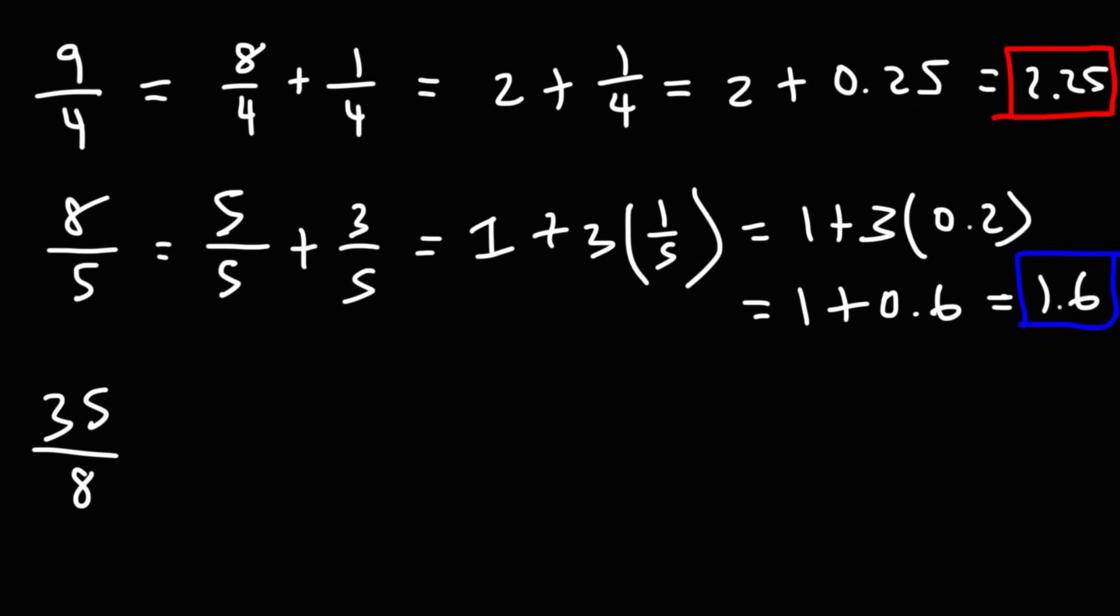Now 35 over 8. The highest multiple of 8 just under 35 is 32, and 35 minus 32 is 3. So we got these two numbers. 32 divided by 8 is 4. 3 eighths, I'm going to write that as 3 times 1 over 8. Now we know that 1 over 8 is 0.125. That's on the list.